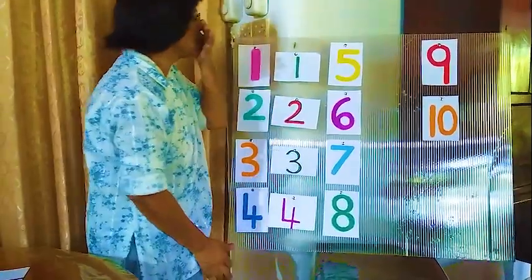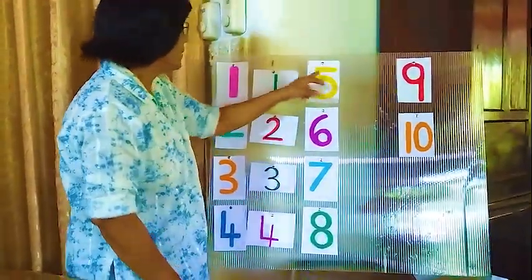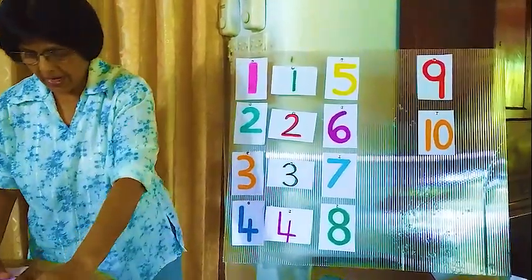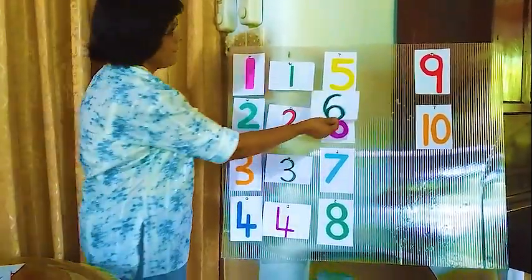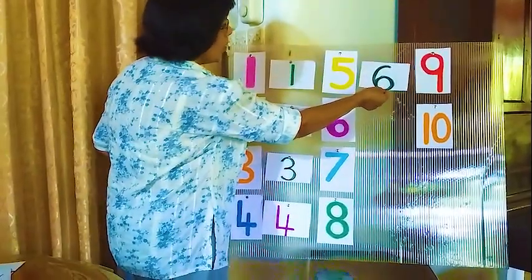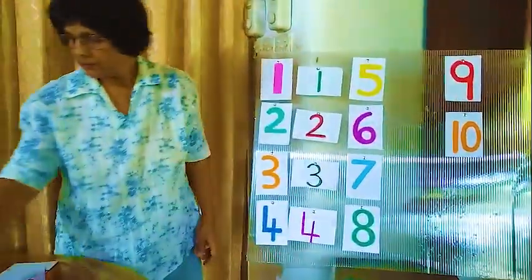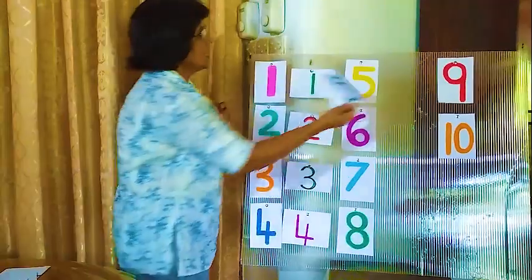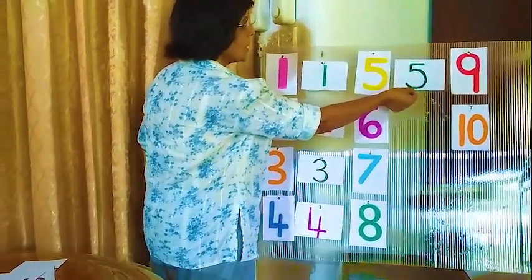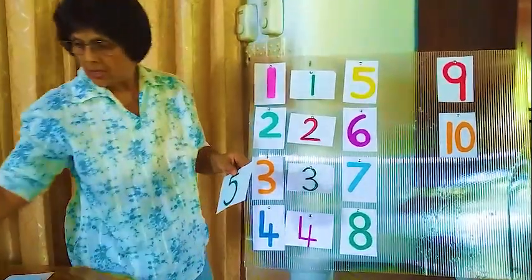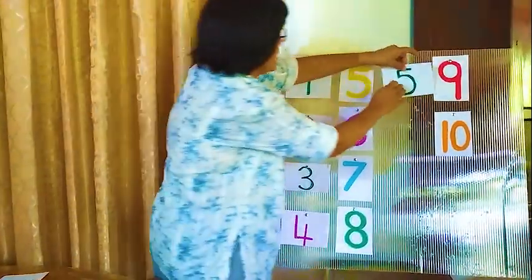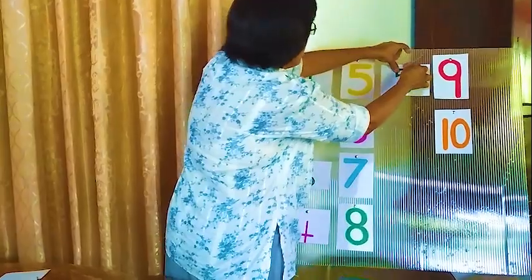Next number is number 5. Is this number 5? Is this number 5? No. What about this — is this number 5? Yes, this is number 5. Now here number 5.